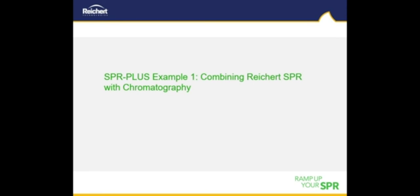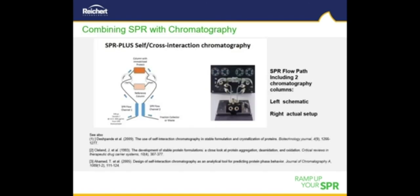In our first example of how the SPR Plus system can be applied, we show how using our flexible valve assembly allows for the combination of SPR with chromatography. This combination can be used as a screening tool to analyze protein-protein self-interactions, providing results like those seen using self-interaction chromatography (SIC), but only using a fraction of the amount of sample that SIC does.